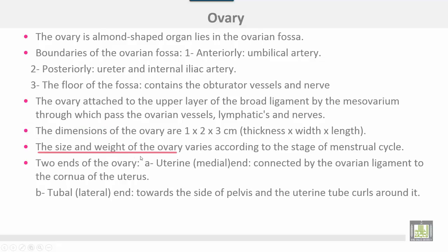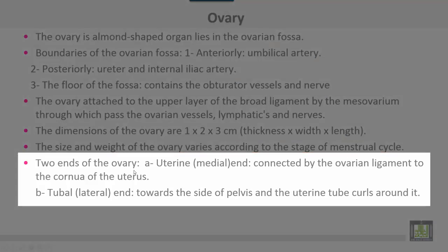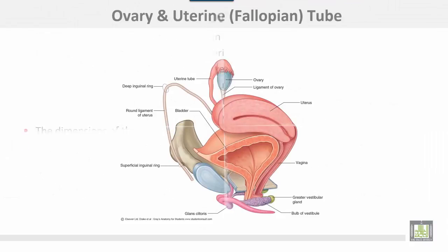The ovary has two ends: the uterine or medial end, connected by the ovarian ligament to the corner of the uterus; and the tubal or lateral end, towards the side of the pelvis, where the uterine tube curls around it. The ovary has tubal and uterine ends, also referred to as medial and lateral ends. The infundibulum of the fallopian tube is associated with the lateral end.